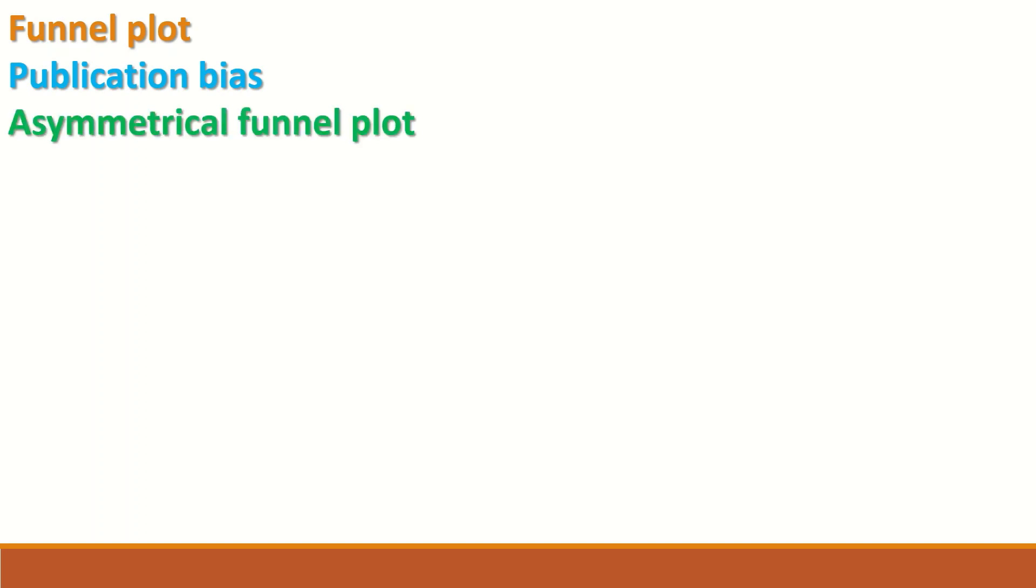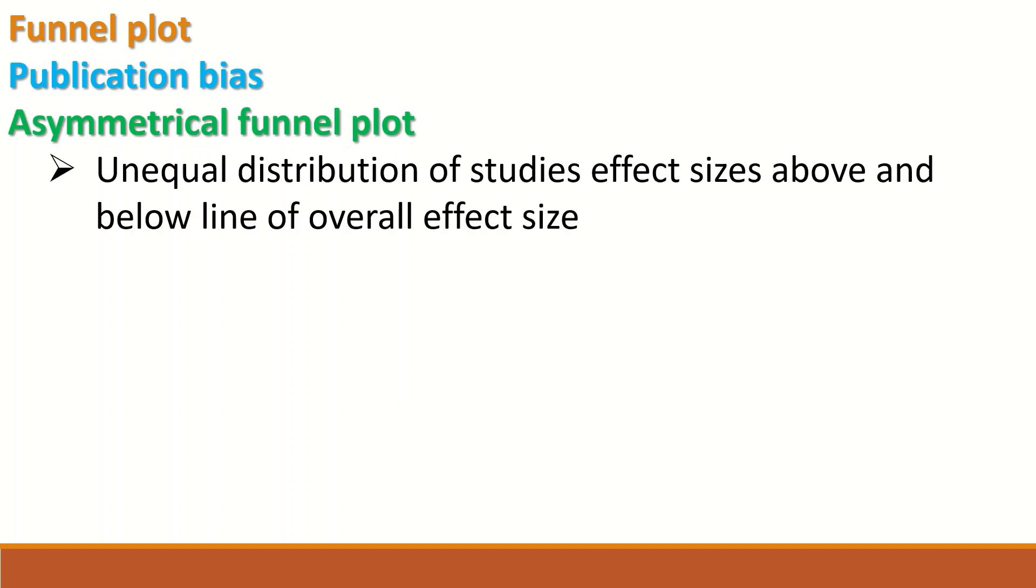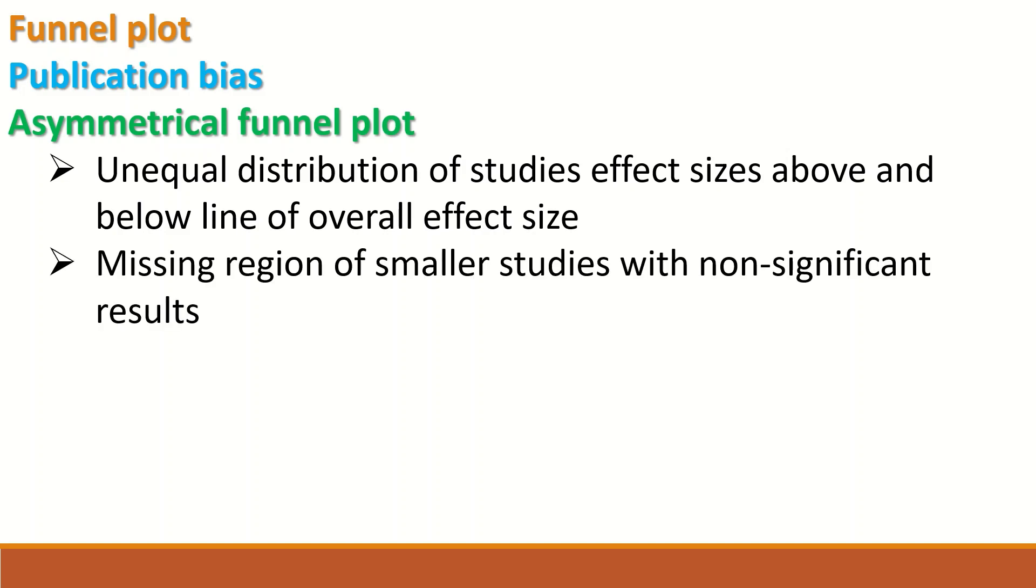This plot shows that there is publication bias based on visual examination of the distribution of the effect size, counting the number of circles above that line, which is the overall effect size, compared to below it. When there is a publication bias, there is an asymmetrical funnel plot, i.e., the distribution of the study effect sizes are unequal above and below the line of the overall effect size.